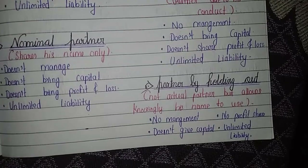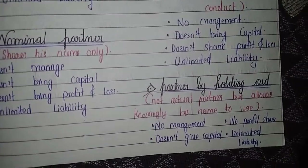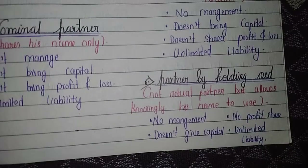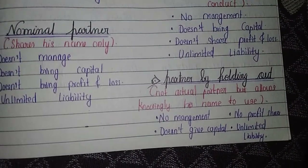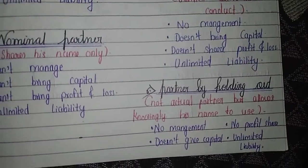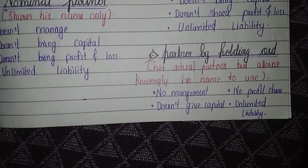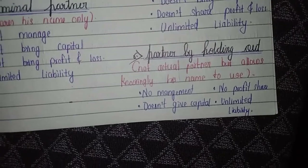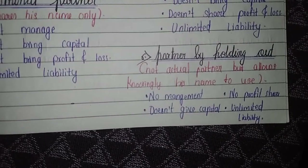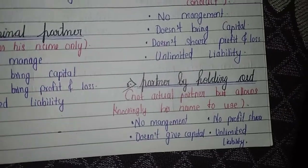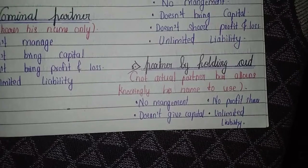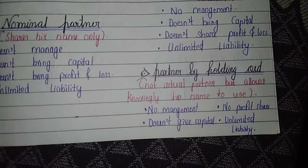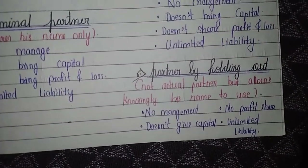A partner by holding out is a person who knows that someone else is using his name for a business without his permission. Since he became aware and did not object, he is treated as a partner by holding out. He does not contribute capital and may not share in profits, but his liability is unlimited because the bank can come to him for repayment, and he may have to repay from his personal assets.